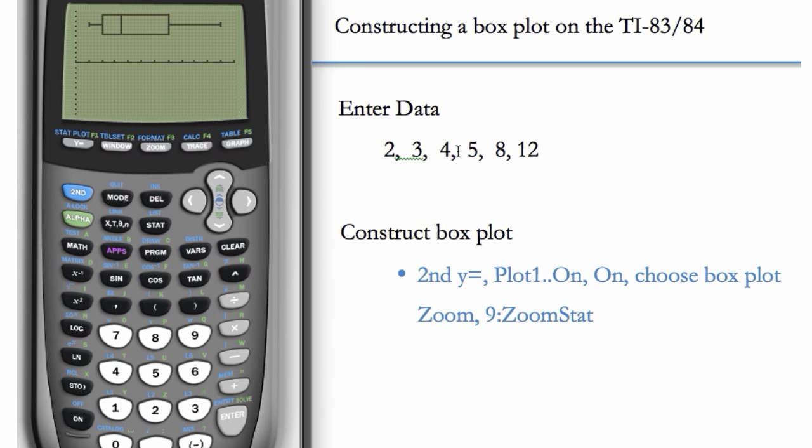Okay, so because it's an even data set, the median is going to be the average of these two middle numbers. So the median should be 4.5. That leaves 3 numbers in the lower half of the data set and 3 numbers in the upper half. So our Q1 then will be 3, and our Q3 will be 8.